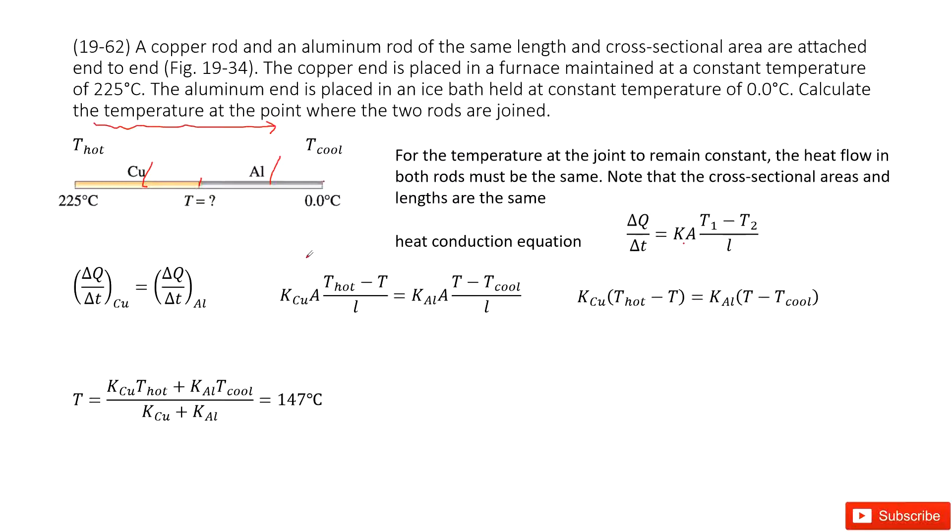In this case, we can see these two rods are attached together. So that means the energy flow from the copper equals the energy flow from the aluminum. Because the energy just transfers from one object to another object. So they are equal.